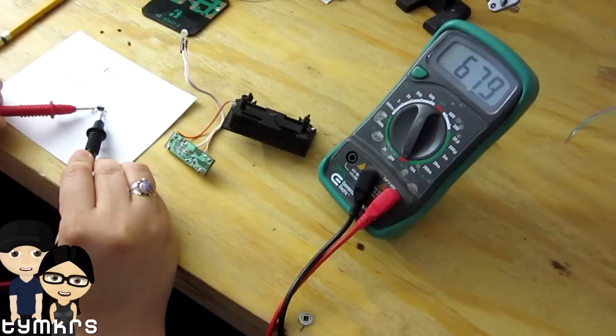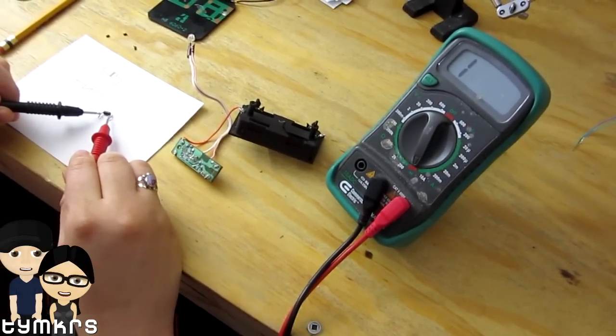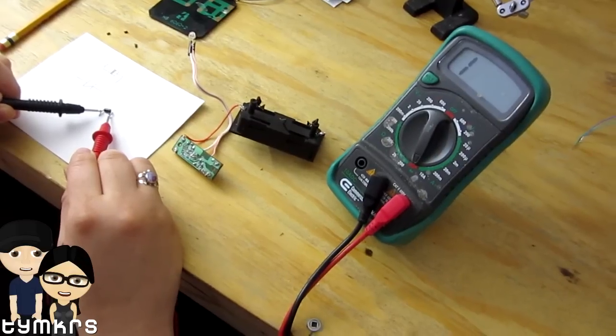You'll see you get this cool value. I don't really know what it means, but you get a value. And then if I switch it again, then you see there's a one and nothing happens.